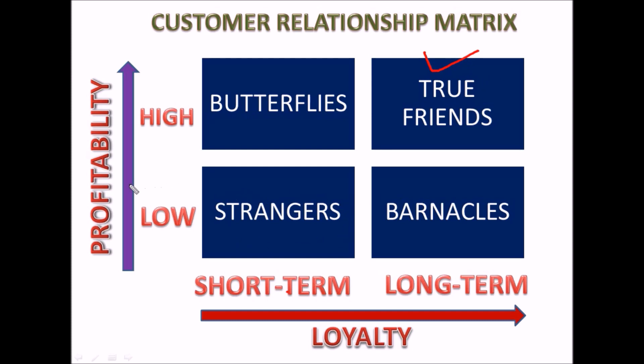Then come Strangers. Strangers are those in which both parameters are low — not only profitability but also loyalty. Both things are low.